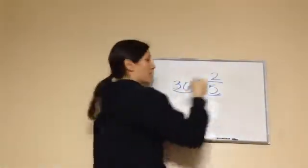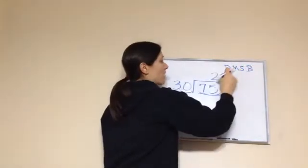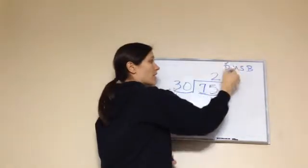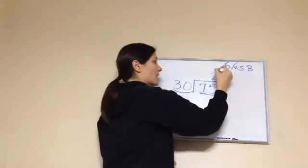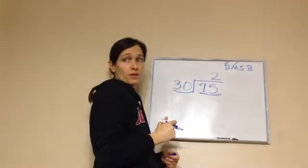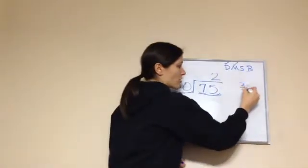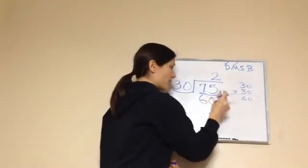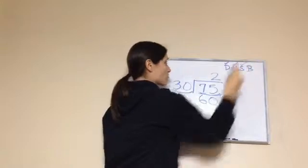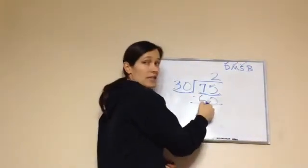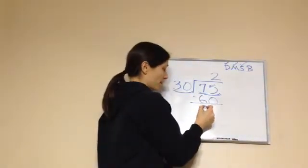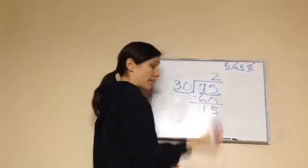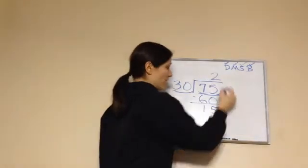What is 30 two times? Let's do our Dad, Mom, Sister, Brother: Divide, Multiply, Subtract, Bring Down. We divided — 30 will go into 75 two times. Now let's multiply: 2 times 30 is 60, because 30 plus 30 is 60. Now subtract: 75 take away 60 gives us 15. Anything to bring down? No. That means you're done — remainder 15.